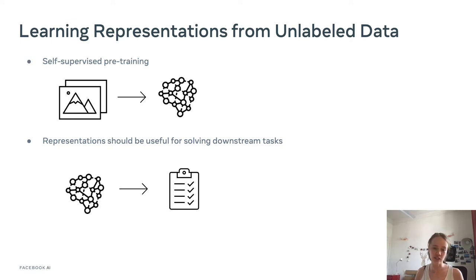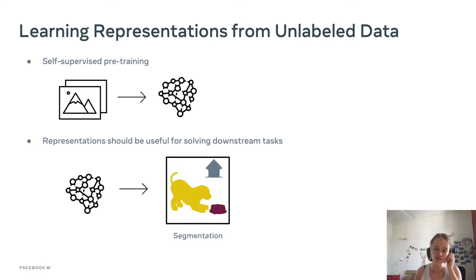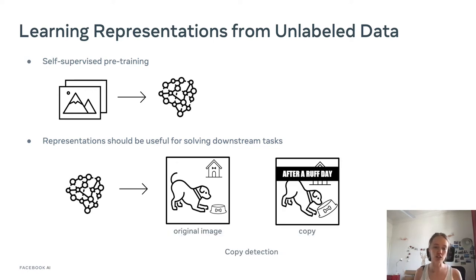To make it more concrete, downstream tasks can include object detection — finding bounding boxes on objects in an image and classifying what's inside them — or segmentation, or image captioning to generate a description for an image. It can also be copy detection: from an original image, try to find copies in a database. So there are many downstream tasks we want to solve, and the hope is to learn a generic representation that will transfer well to all of them.